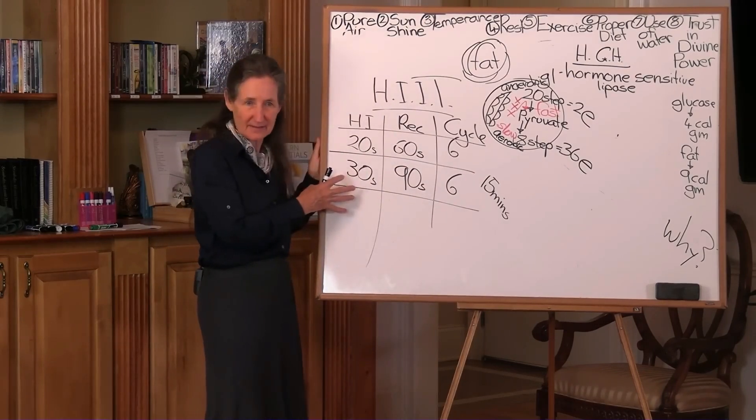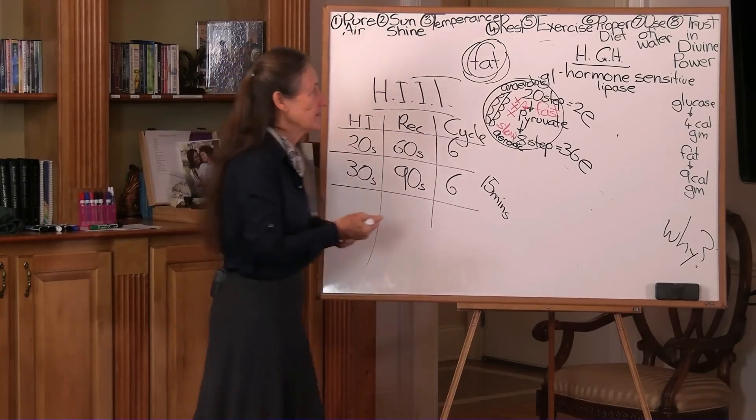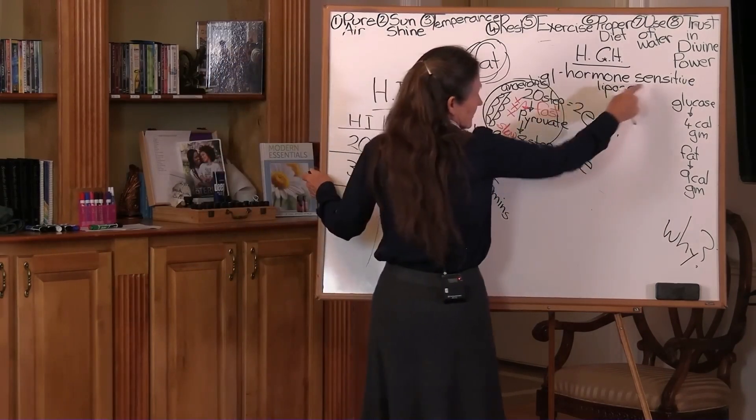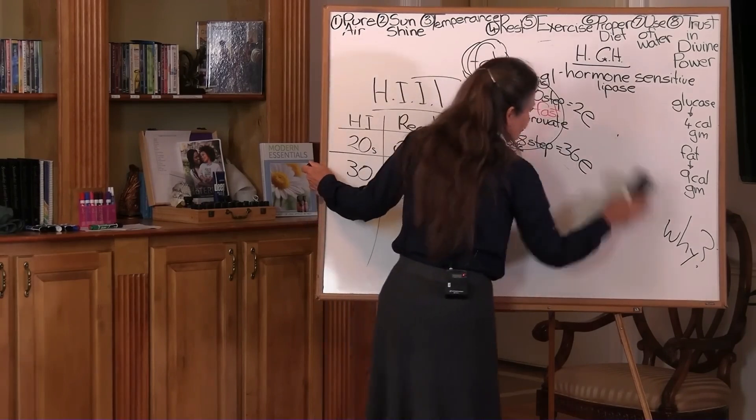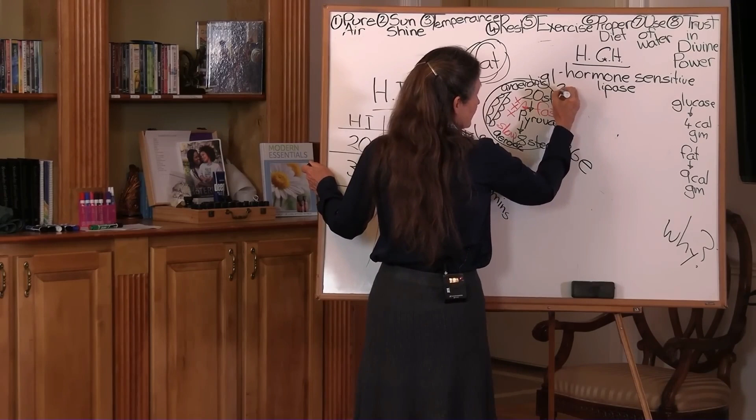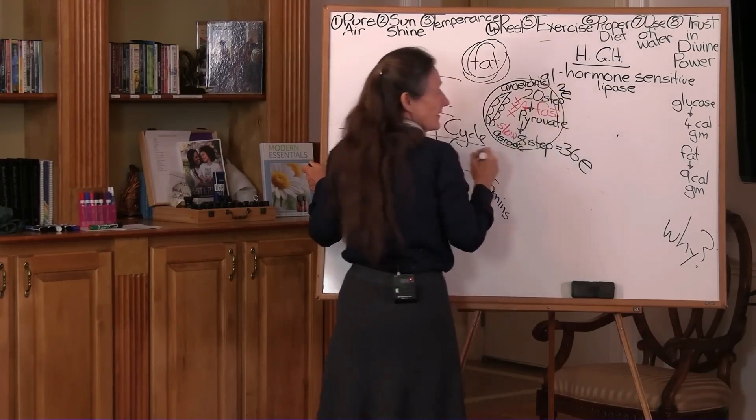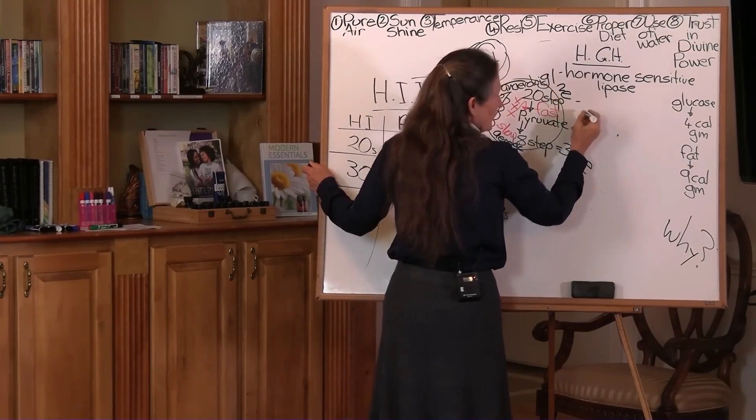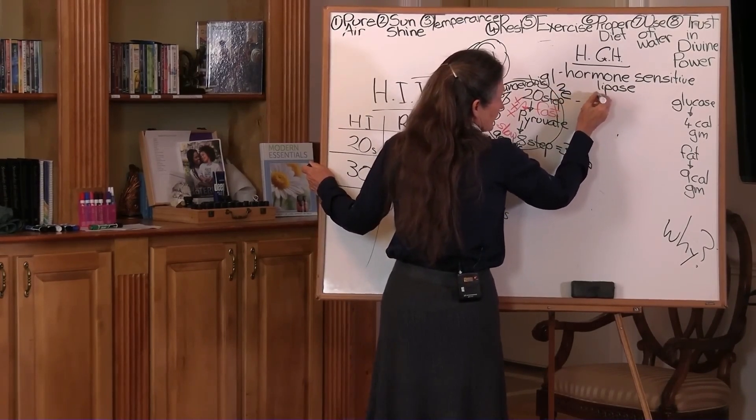This is how we access it, causing a release of the human growth hormone. So hormone-sensitive lipase is activated, and hormone-sensitive lipase, as it is activated, it switches over to burning fat. It becomes a fat burner.